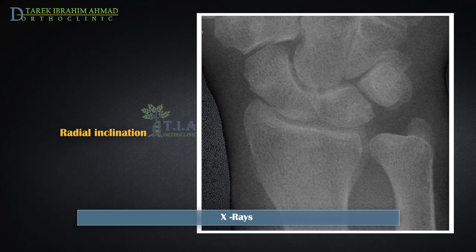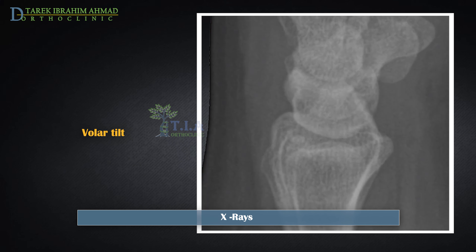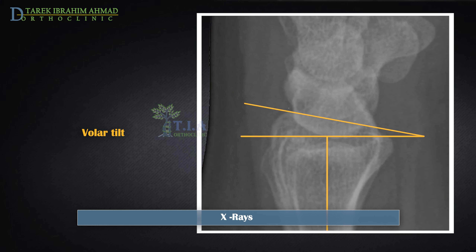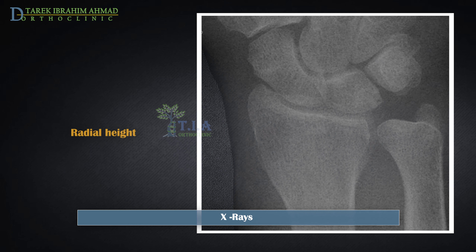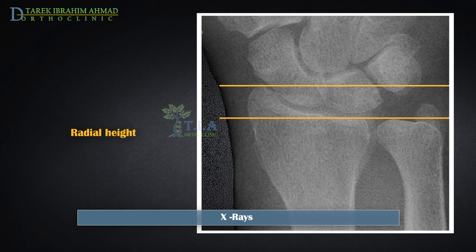Radial inclination is the angle between a line perpendicular to the longitudinal axis of the radius and a line joining the distal tip of the radial styloid and the distal sigmoid notch — normally 21 to 25 degrees. Volar tilt is the angle between a line drawn between the most distal points of the dorsal and volar lips of the distal radius on a true lateral view and the line drawn perpendicular to the longitudinal axis of the radius — normally 11 to 12 degrees. Radial height is the distance between a line drawn at the tip of the radial styloid process perpendicular to the longitudinal axis of the radius and a second perpendicular line at the level of the distal articular surface of the ulnar head — normally 11 to 12 millimeters.